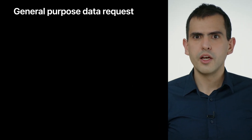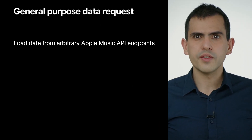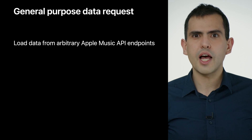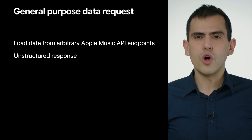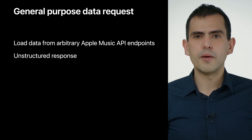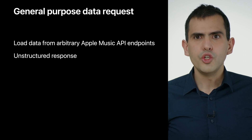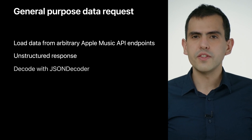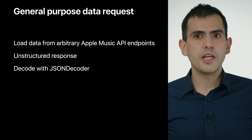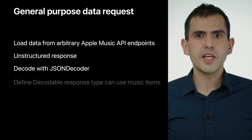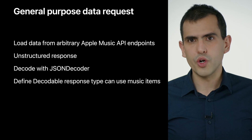MusicKit also offers a general purpose data request, which is different from structured requests in that it allows you to load content from an arbitrary Apple Music API endpoint using its URL. What you'll get back from this request is the raw data for the JSON response from Apple Music API. You need to decode this raw data with JSON decoder. But doing that doesn't have to be hard, because you can leverage existing music item types since they conform to the Codable protocol.